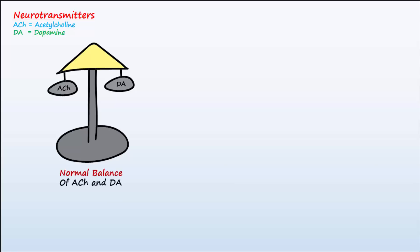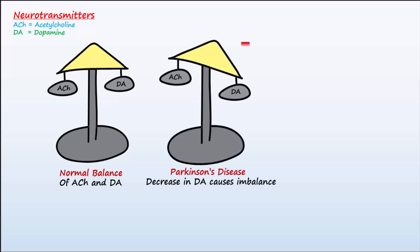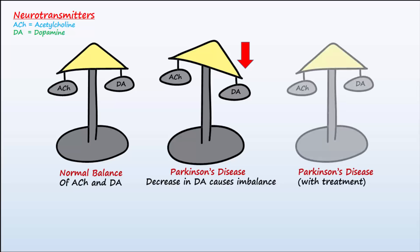In healthy individuals, dopamine and acetylcholine in the basal nuclei are in normal balance. With Parkinson's disease, dopaminergic neurons die, bringing about an imbalance between the two neurotransmitters. It makes sense that the medications used in Parkinson's disease either bring dopamine levels up or act to decrease levels of acetylcholine to help restore the normal balance. Unfortunately, none of the medications available slow the progression of the disease — they only slow progression of symptoms.